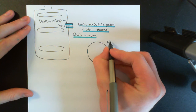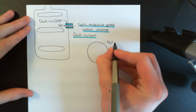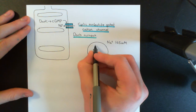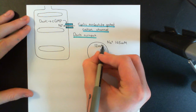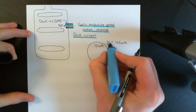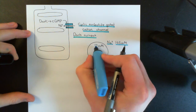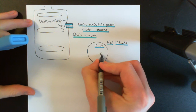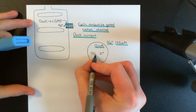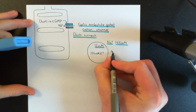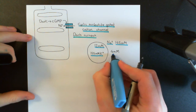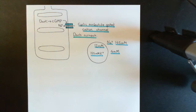Sodium concentration is usually much higher outside the cell than inside the cell — around 145 millimolar outside the cell, whereas it's around 12 millimolar inside the cell. That's about a 12-fold gradient of sodium ions favouring the movement of sodium into the cell. Potassium, meanwhile, is much higher inside the cell, usually at a concentration of around 155 millimolar, than it is outside the cell where it's usually at a concentration of around 4 millimolar. That's a close to 40-fold gradient favouring the movement of potassium out of the cell.